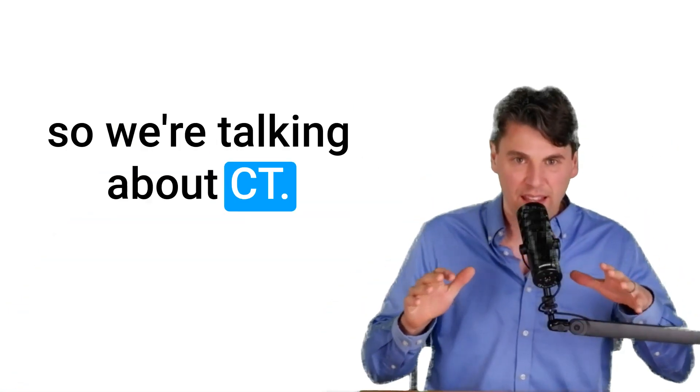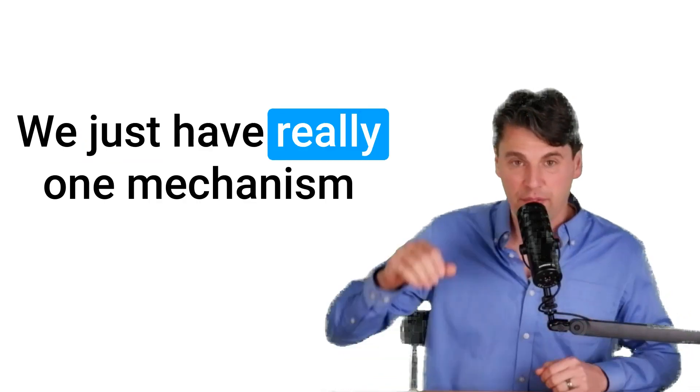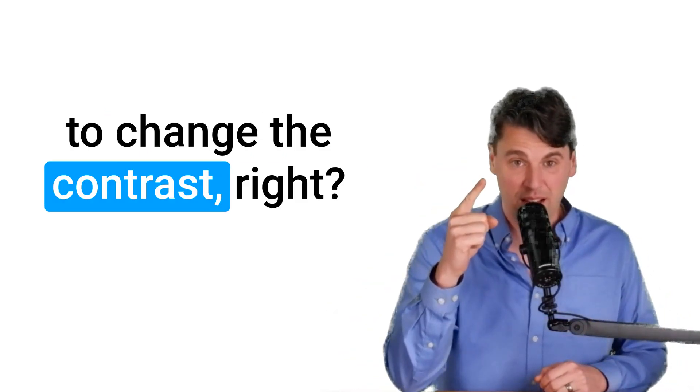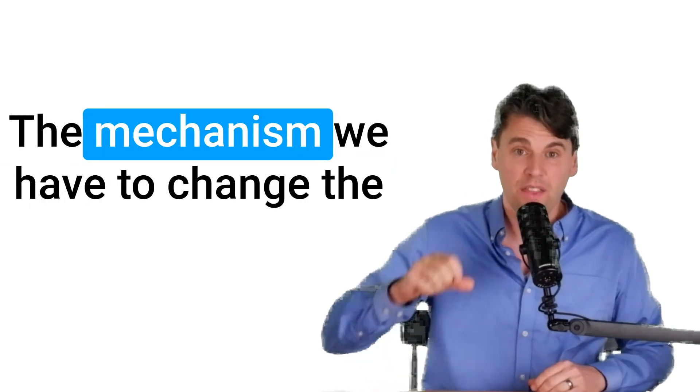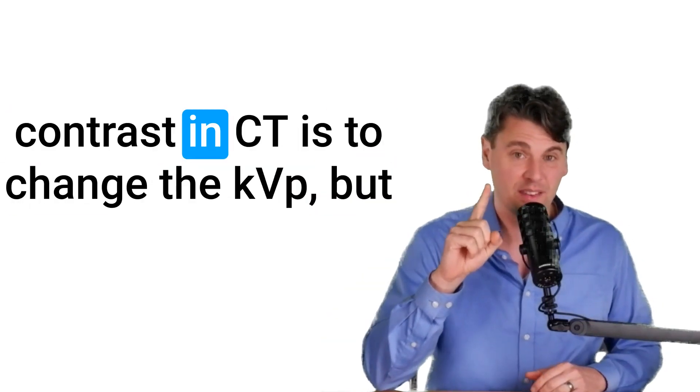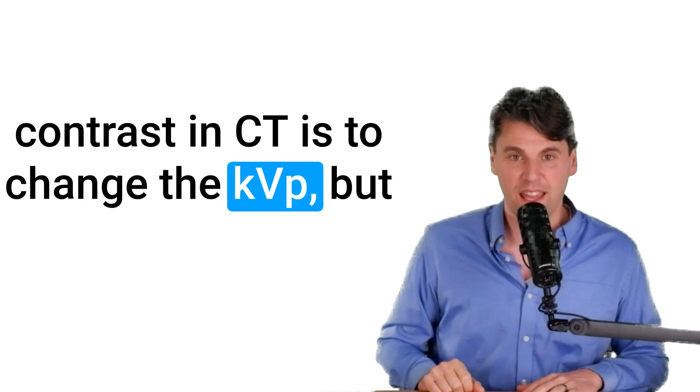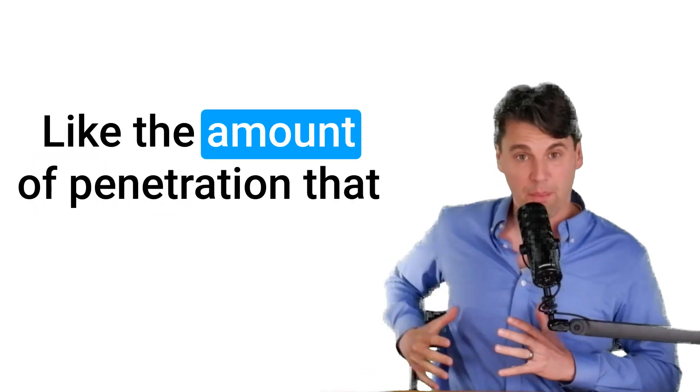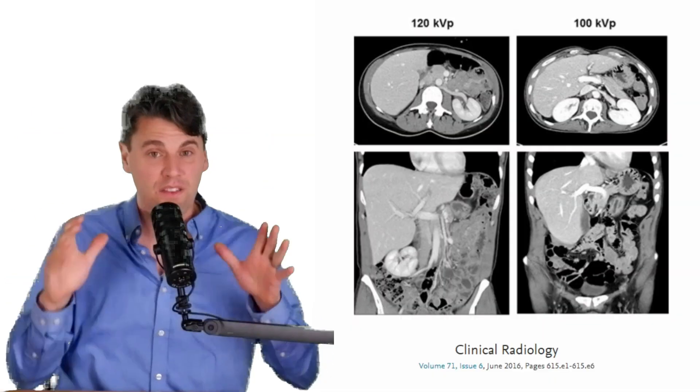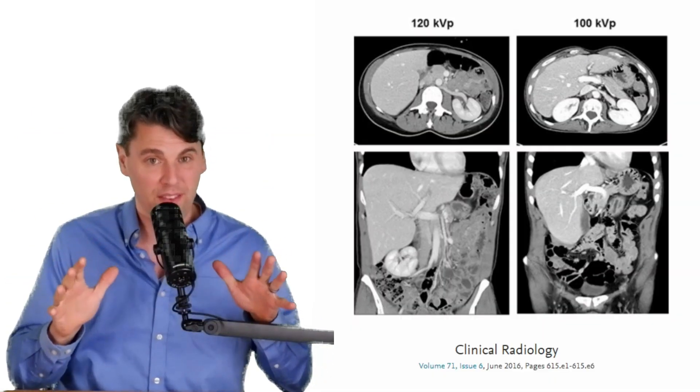So we're talking about CT. In CT, we just have really one mechanism to change the contrast, right? Besides injecting additional contrast, the mechanism we have to change the contrast in CT is to change the KVP. But that also changes other properties, like the amount of penetration that we're going to have. See our video on KVP if you haven't seen that already.